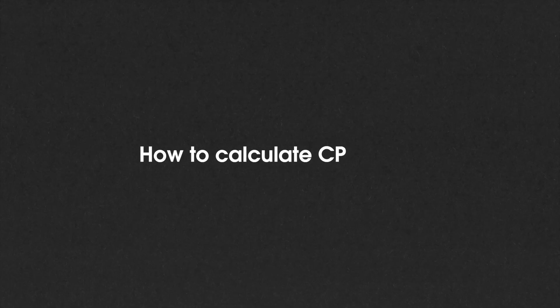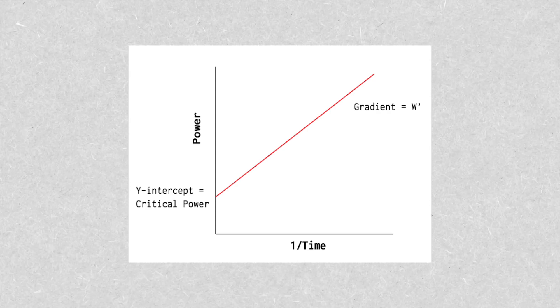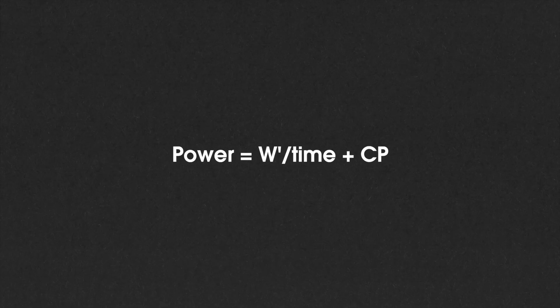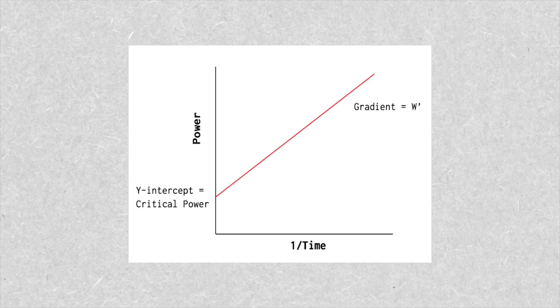Next, we'll look at how critical power and W' can be calculated. The most practical approach is to transform the power-duration relationship into a linear relationship by plotting power against one over time. The equation becomes: power equals W' over time plus critical power. By completing a series of maximal efforts we can plot this linear power-duration relationship to determine W' and critical power, where critical power is the Y-intercept and W' is the gradient.